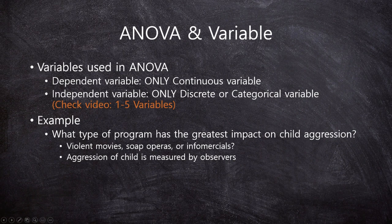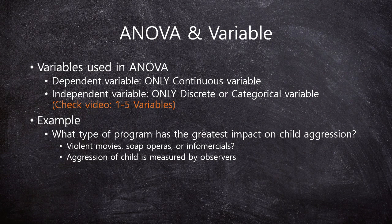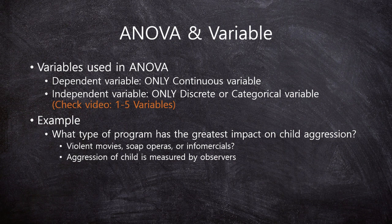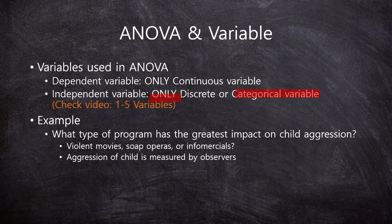But before going to ANOVA, we have to know the variables used in ANOVA. In statistics, there are some assumptions and regulations. The regulation is like a law. The first law is: in ANOVA, the dependent variable should always and only be a continuous variable. And the independent variable should always and only be a discrete or categorical variable. This is the rule — you have to follow it.